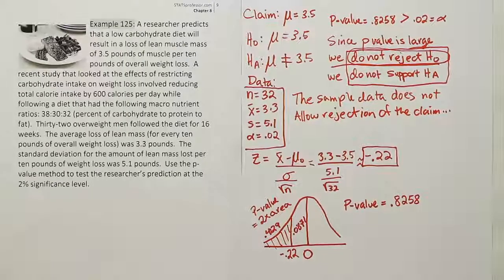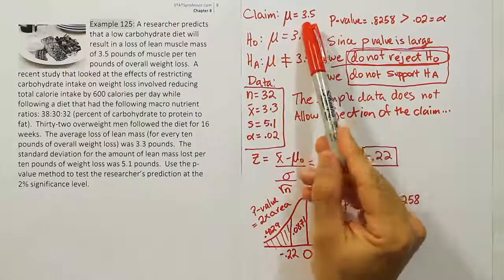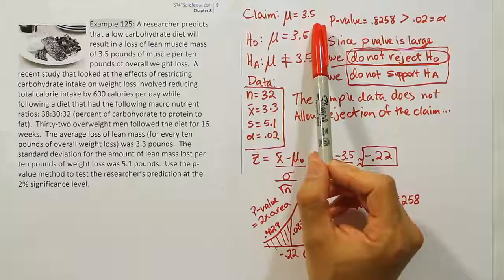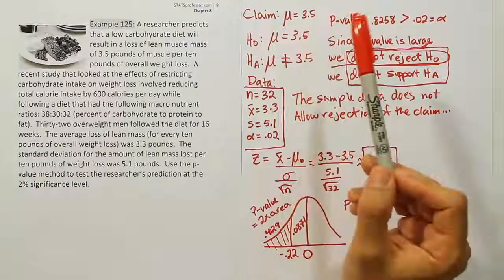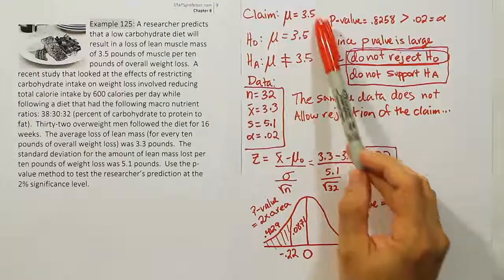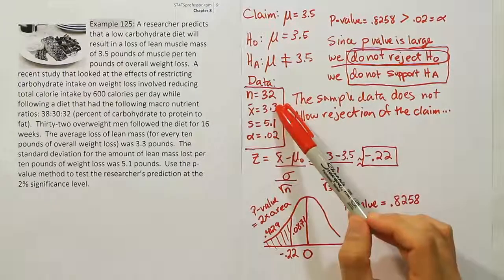In everyday terms, what this means is that this researcher who said the lean mass loss would be 3.5 pounds for every 10 pounds of weight loss on the diet was basically right because the sample mean came in very close to his number. This data isn't strong enough to say that he's wrong.